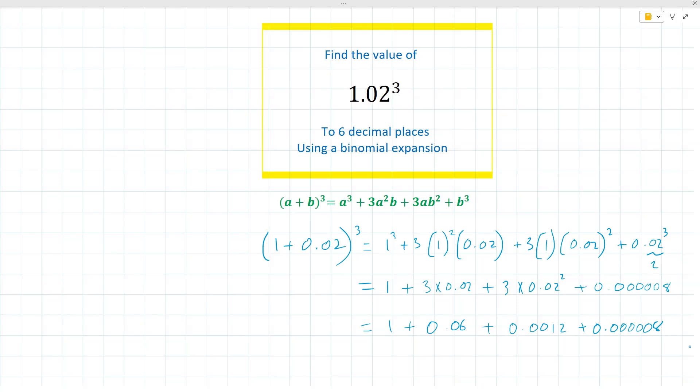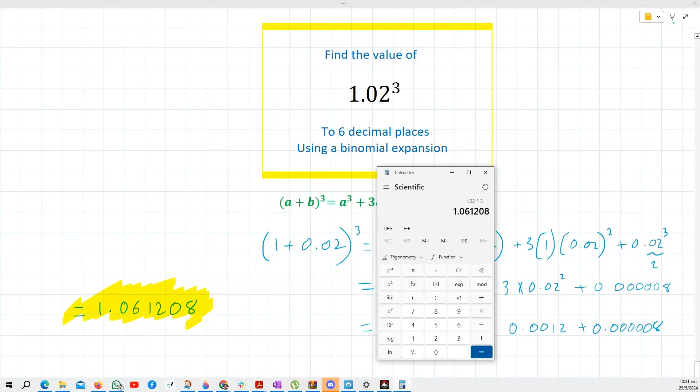And if we put all this together, we can say that that's equal to 1.061208. So that is our answer for this question to six decimal places using a binomial expansion, which is the expansion of (1 + 0.02)³. And so I've taken the liberty to check this with a calculator to make sure that it's correct. And 1.02³ is indeed 1.061208.